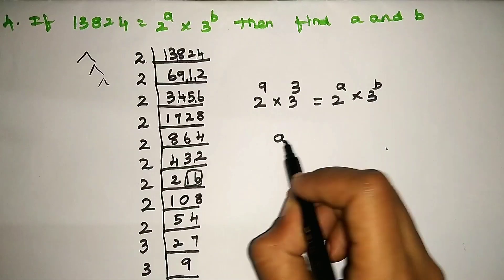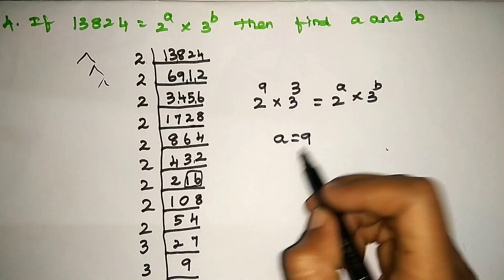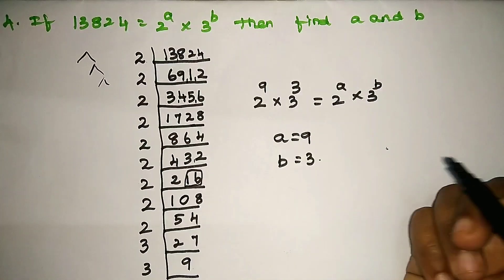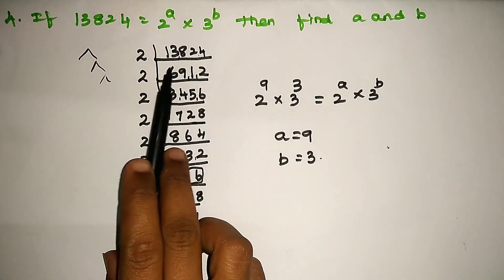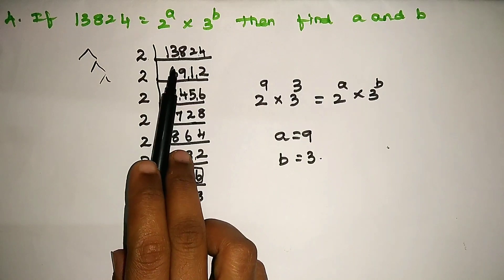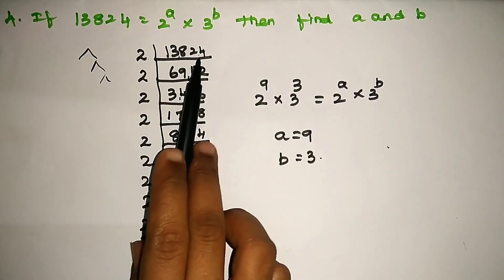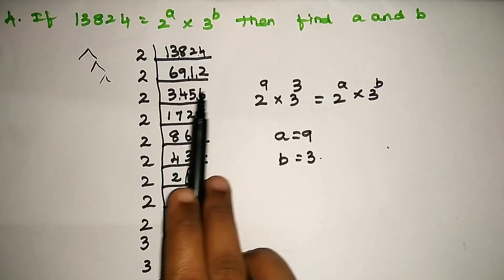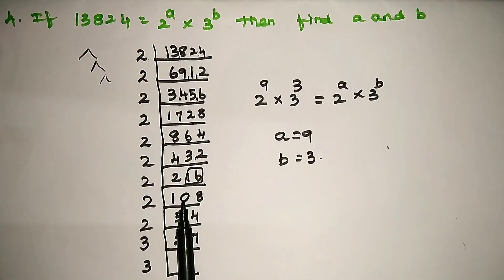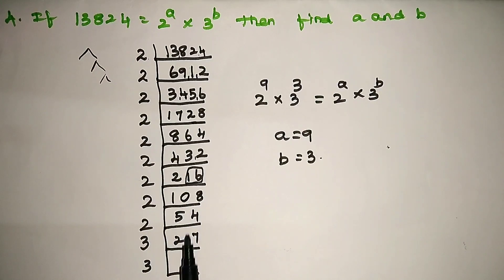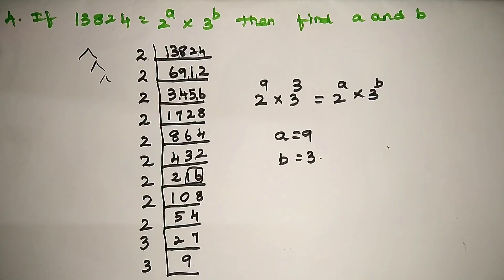How many times do we compare? A equals 9, and B equals 3. So the final answer is A is equal to 9 and B is equal to 3. If you compare the number 16, you can do it the same way. If you are interested, watch the video and leave a comment. Please subscribe to the channel. Thank you.